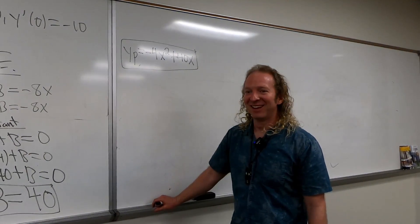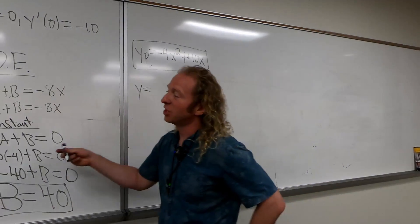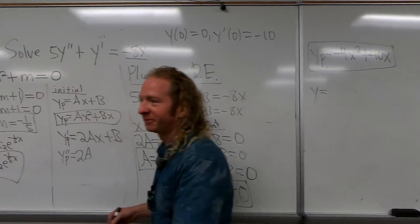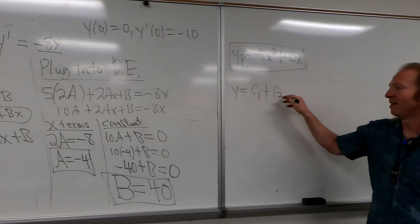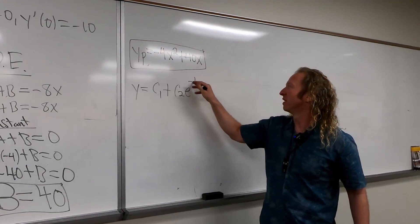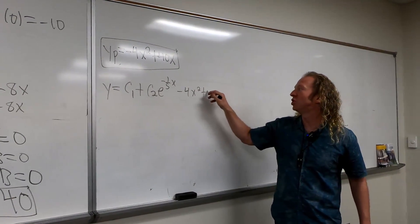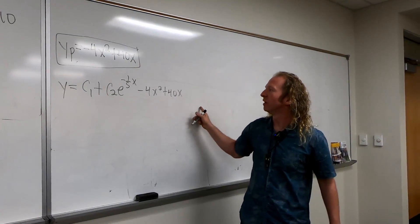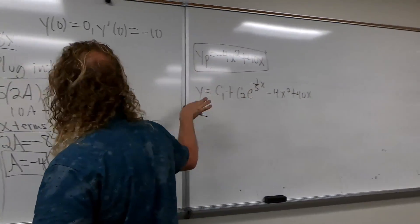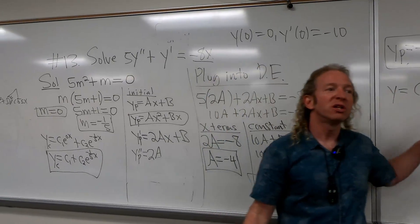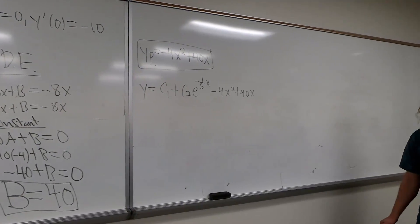The general solution will be in terms of C1 and C2. So it'll be C1 plus C2 e to the negative 1/5 x, plus negative 4x squared plus 40x. This is the general solution to the DE — every single answer to the differential equation.